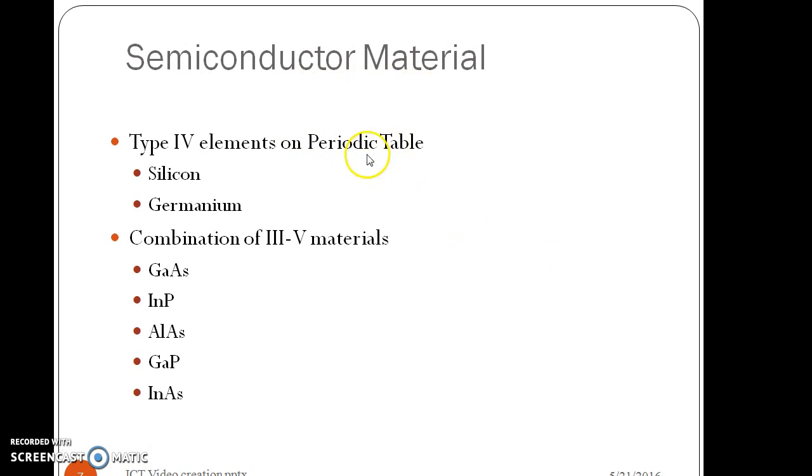The semiconductor materials used for optical sources are type 4 elements silicon and germanium, and a combination of type 3 and 5 materials such as gallium arsenide, indium phosphide, aluminum arsenide, indium arsenide, and gallium phosphide.